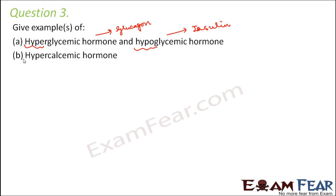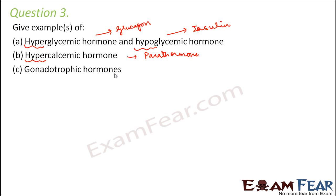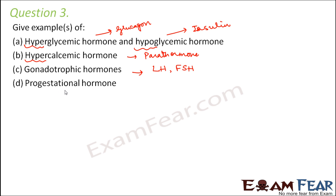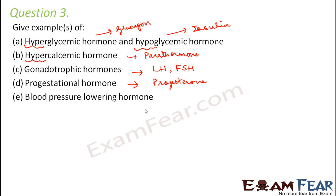The hypercalcemic hormone — one which increases the level of calcium in the blood — is parathormone, secreted by the parathyroid gland. Gonadotropic hormones that stimulate gonadal activity include LH (luteinizing hormone) and FSH (follicle stimulating hormone). The progestational hormone, which supports pregnancy, is progesterone. The blood pressure lowering hormone is noradrenaline, which is released by the adrenal medulla.